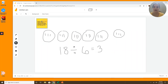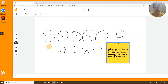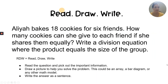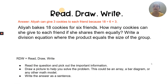I've finished my Read, Draw, Write strategy. I've got a drawing and a nice, juicy worded answer, so I think I'm done. Let's go back and check the answer: Aaliyah can give three cookies to each friend because 18 divided by six equals three. Yes, that's exactly what I said — worded a little differently, but I want to emphasize that you are going to answer in your own words, as completely as you are able to, and just do your best.